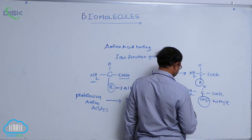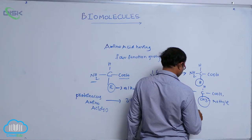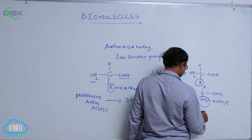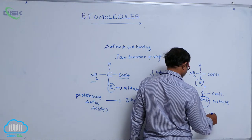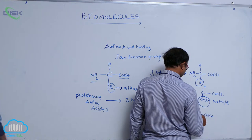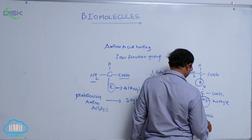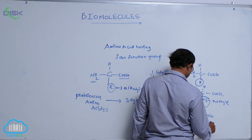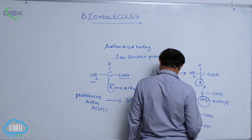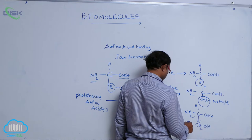In the serine, the amino group, carboxylic group, and hydrogen are present, and that is known as the hydroxy group. At the fourth carbon position, that is known as the hydroxy group.